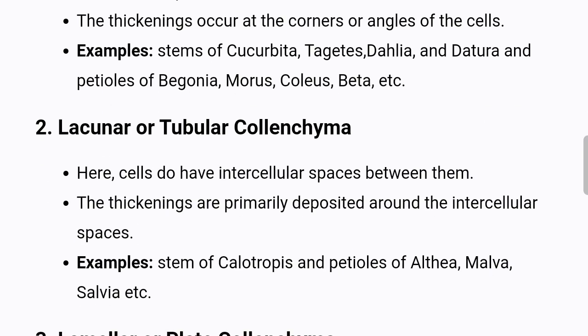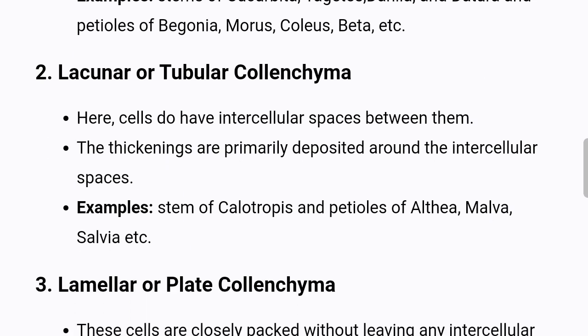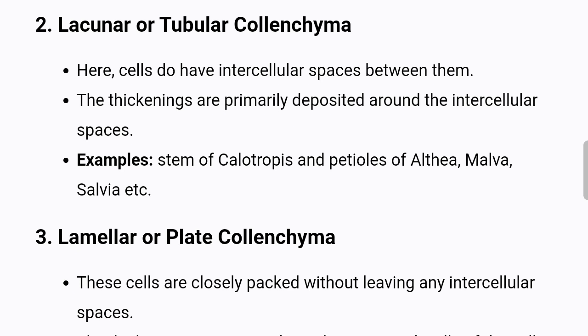2. Lacunar or tubular collenchyma — here, cells do have intercellular spaces between them. The thickenings are primarily deposited around the intercellular spaces. Examples: stem of Calotropis and petioles of Althea, Malva, Salvia, etc.